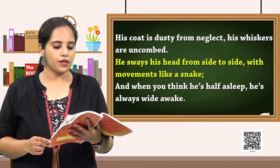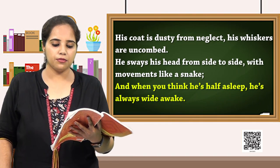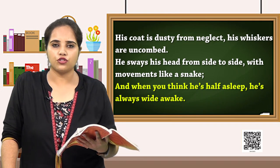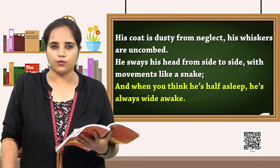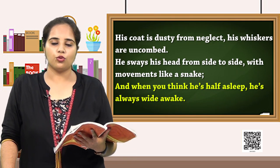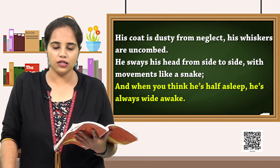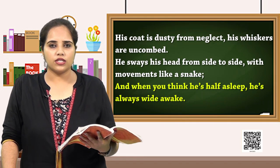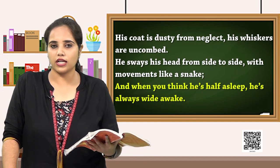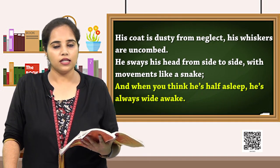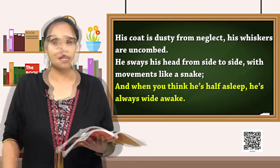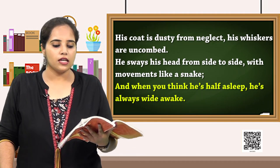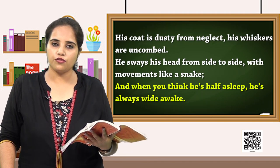Look at the last line of the stanza: 'And when you think he is half asleep, he is always wide awake.' This tells us a special characteristic of Macavity — that Macavity is somebody who is totally unpredictable and who is pretending all the time. Macavity might not be sleeping at all. He might look like he is asleep, but he is always half asleep, which means he is still conscious of whatever is going on around him.